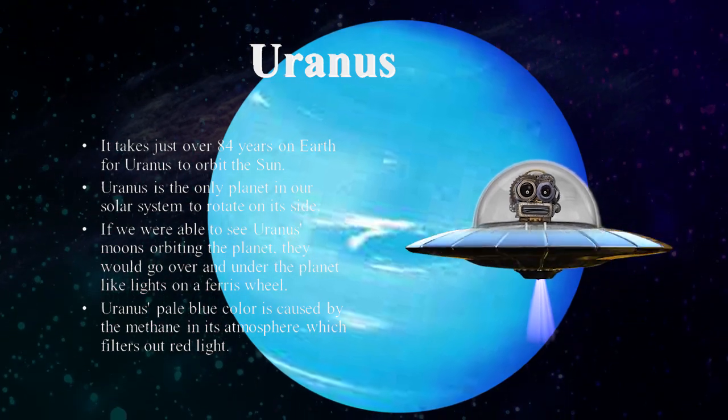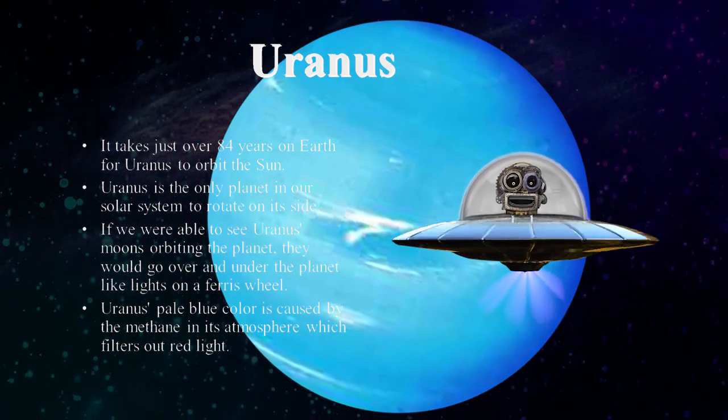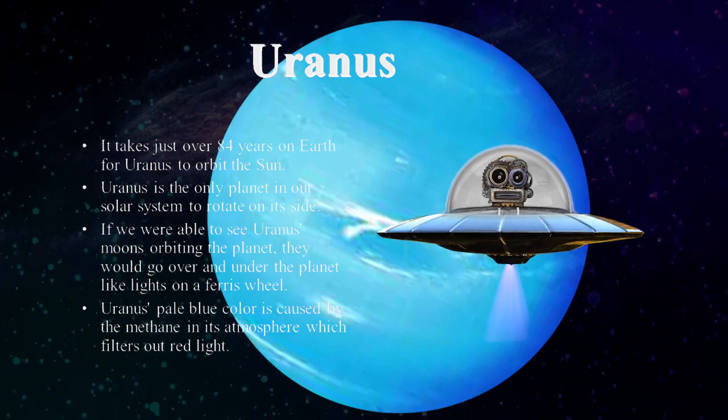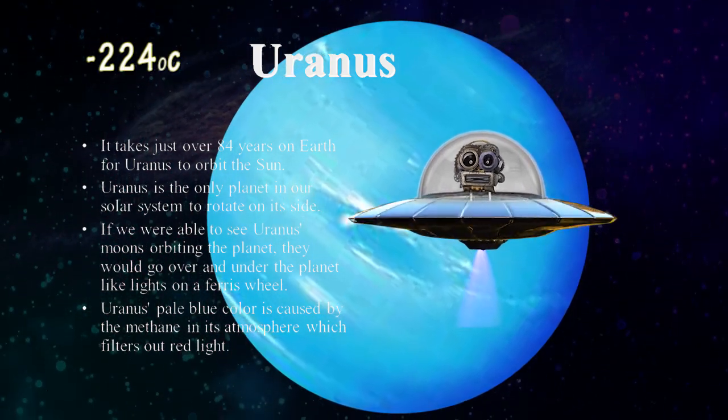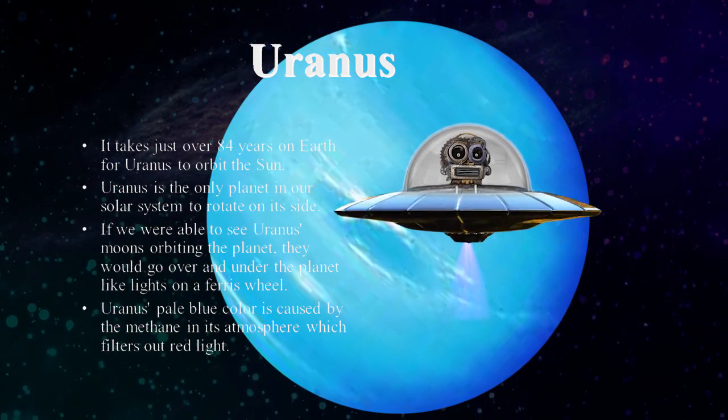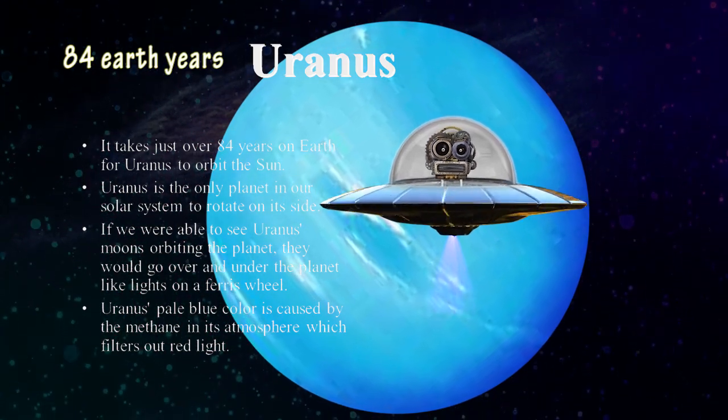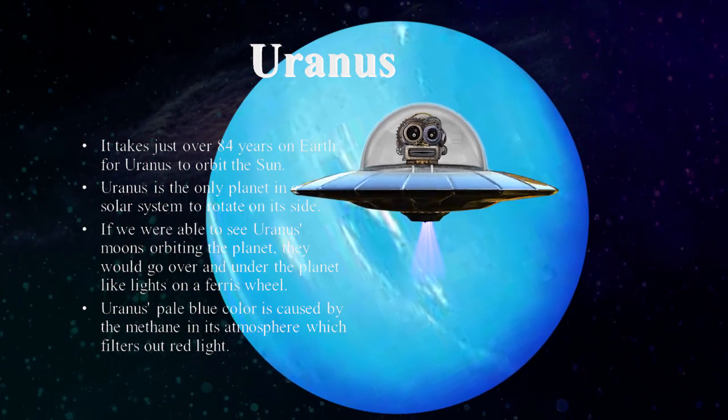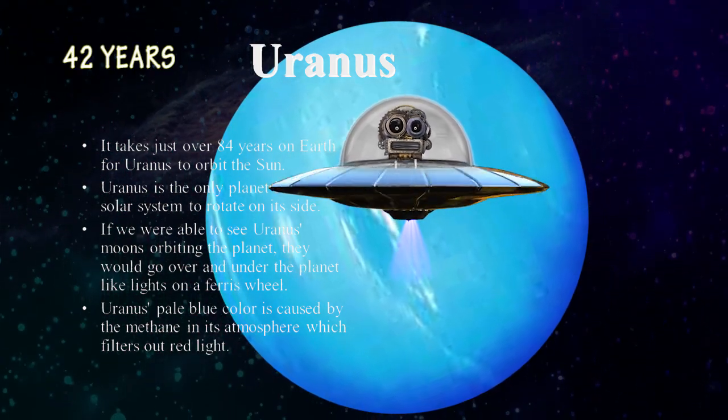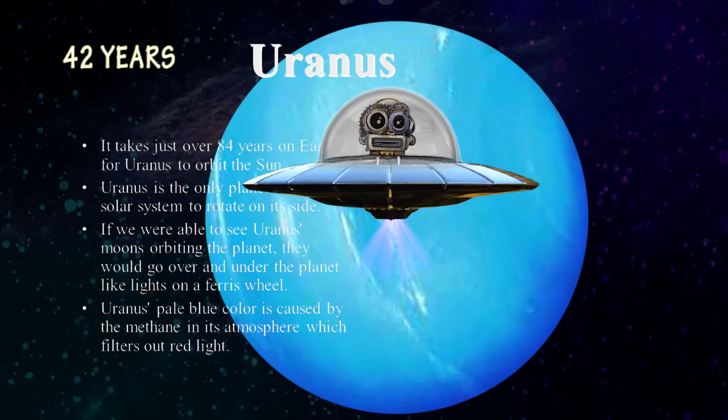Uranus is a very cold planet, with temperatures dropping to about minus 224 degrees Celsius. It takes about 84 Earth years to revolve around the Sun, out of which it gets direct sunlight for 42 years, and the rest remain in darkness.